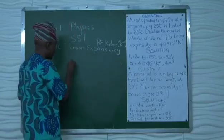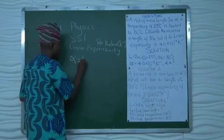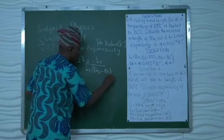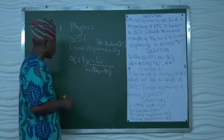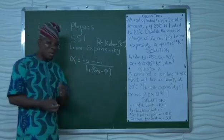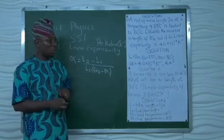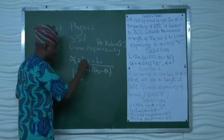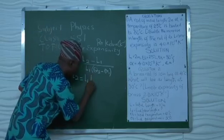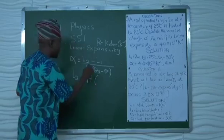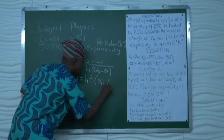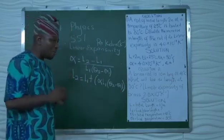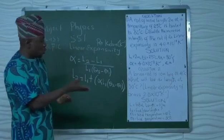From our general equation: linear expansivity equals L2 minus L1, all over L1 open bracket T2 minus T1. We are looking for L2, so we make L2 the subject of the formula by cross multiplying. This gives us: L2 equals L1 plus open bracket linear expansivity times L1 times open bracket theta 2 minus theta 1. Once we have this, we introduce our values.